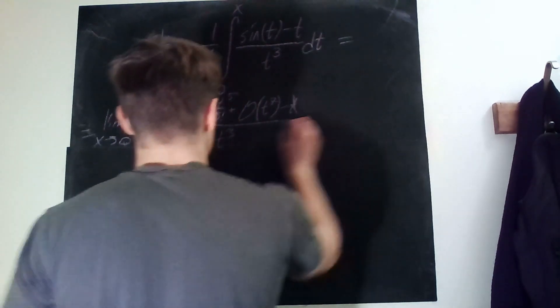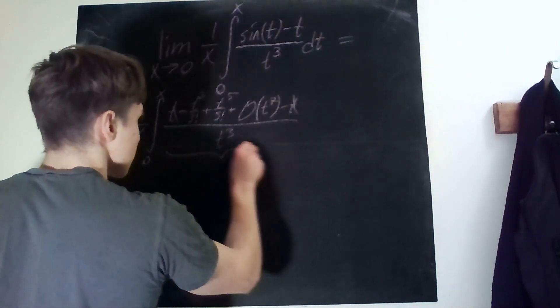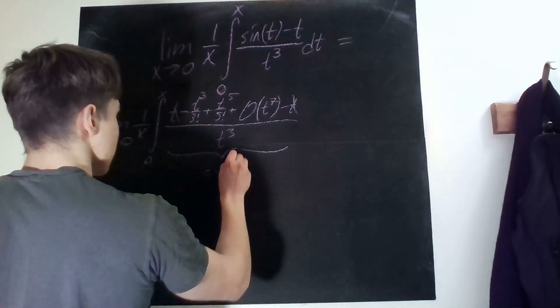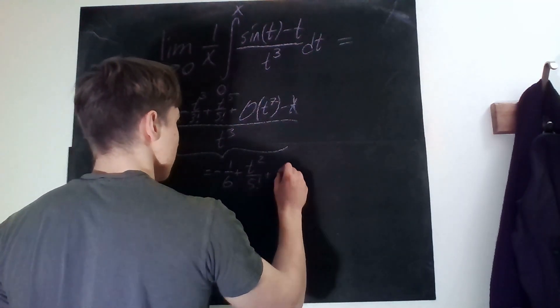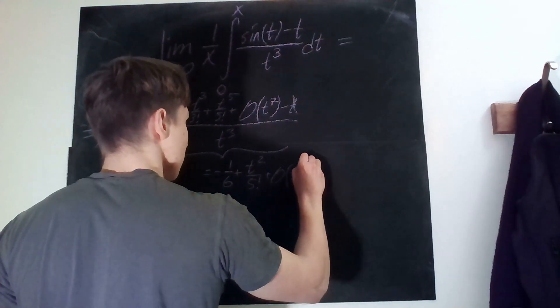Therefore this thing in here is equal to minus 1 over 6 plus t² over 5 factorial plus big O of t to the power of 4.